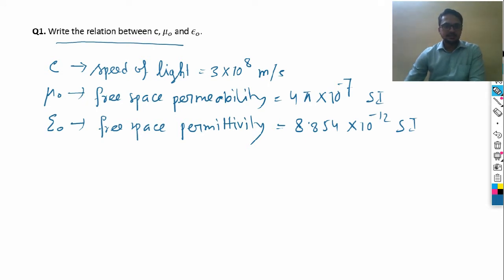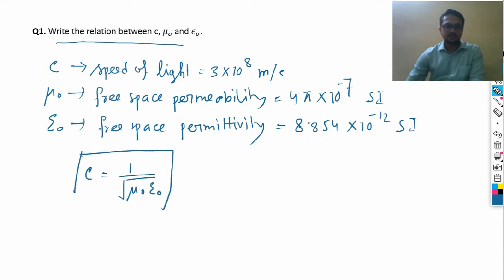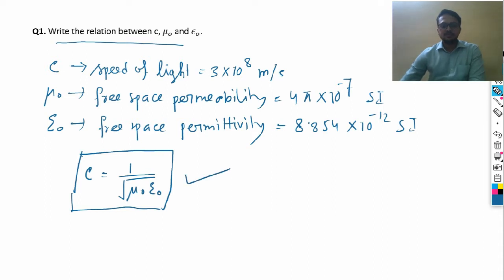The correct relation among the three quantities is: C = 1/√(μ₀ε₀). You only need to write this much. You don't need to mention what C is or its value — just write C = 1/√(μ₀ε₀).